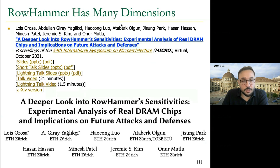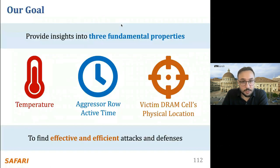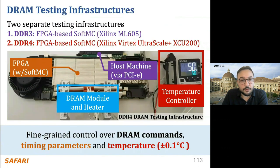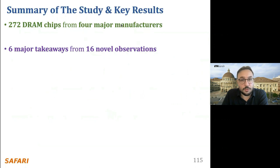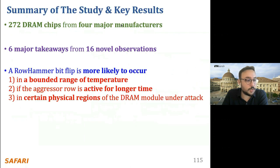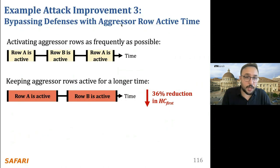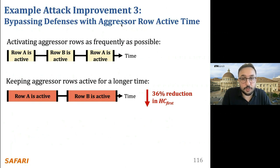We also did new RowHammer characterization studies, providing a deeper look into RowHammer sensitivities — particularly to temperature, aggressor active time, and within-DRAM physical location — using 270 DRAM chips from four major manufacturers. A RowHammer bit-flip is more likely to occur in a bounded range of temperature if the aggressor row is active for a longer time, in certain physical regions of the DRAM module. Instead of activating the aggressor row as frequently as possible, if each aggressor row is active for a longer time, you can reduce the number of activations needed to induce a bit-flip significantly, and thereby bypass defenses that do not account for this.